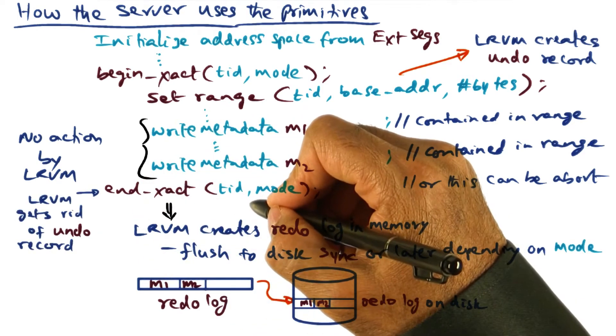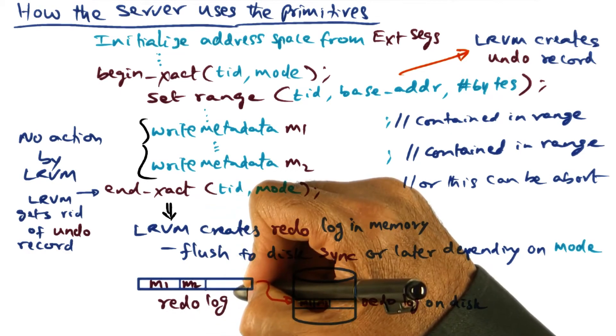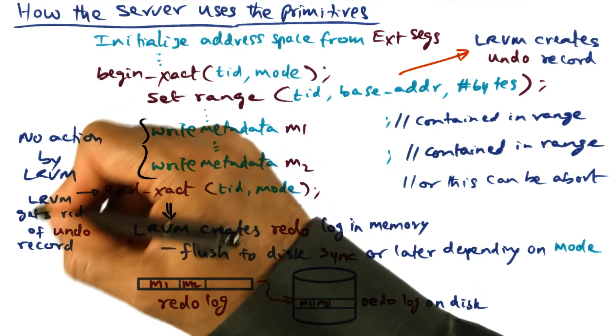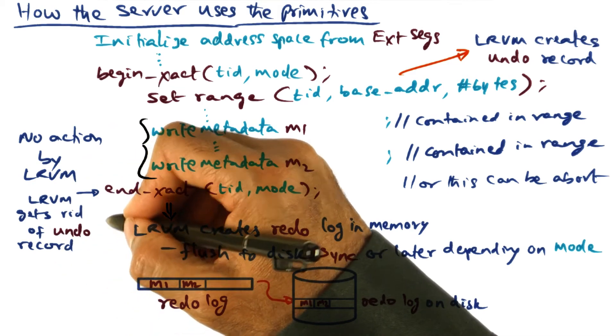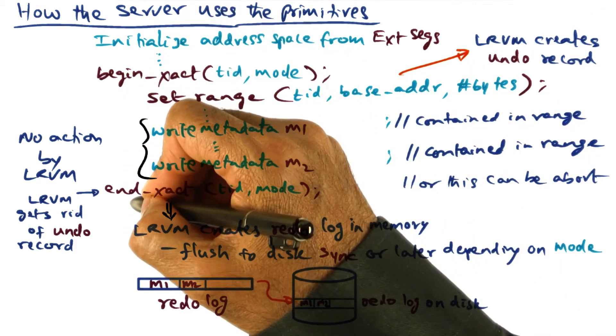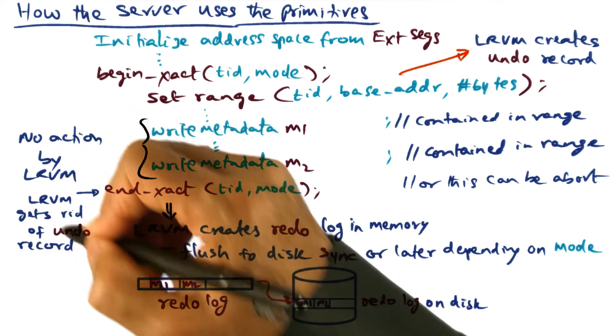So once the transaction is committed, meaning that LRVM has created the redo log for this particular transaction, then the undo record is no longer needed because undo record, if you recall, was created just for the eventuality that this transaction may not commit. But now that the transaction is committed, we can throw away this undo record.